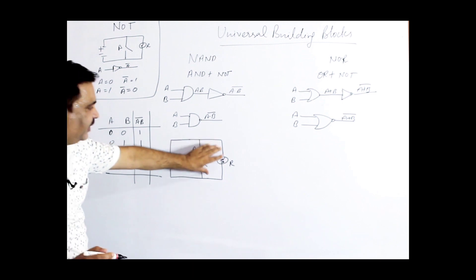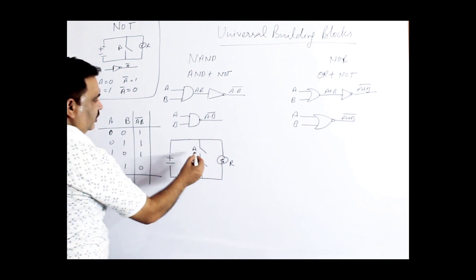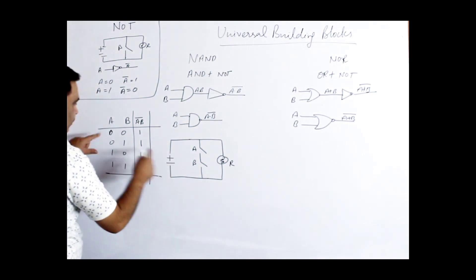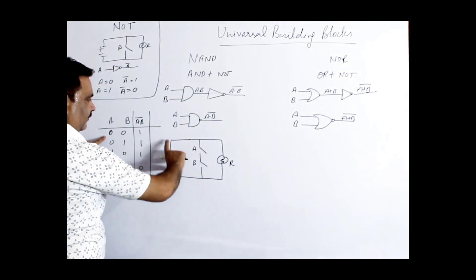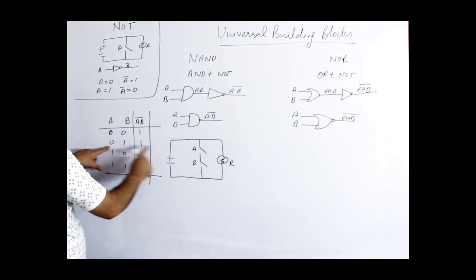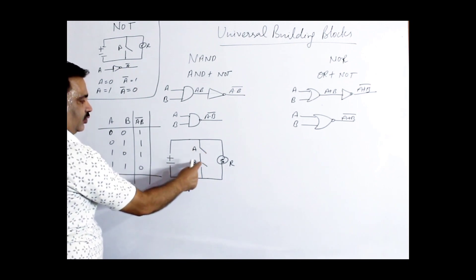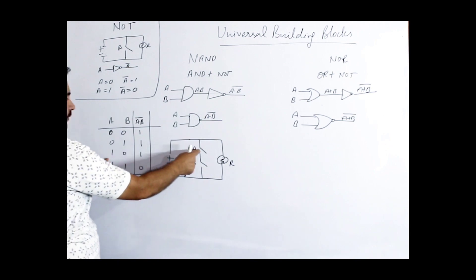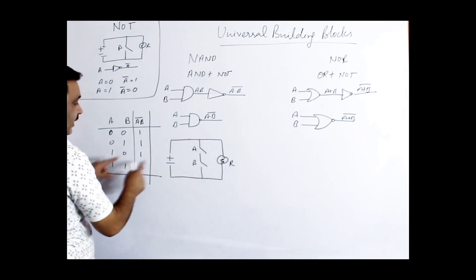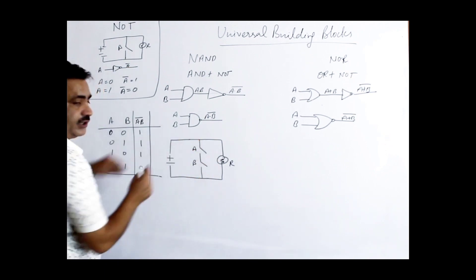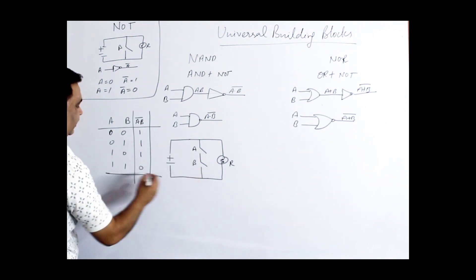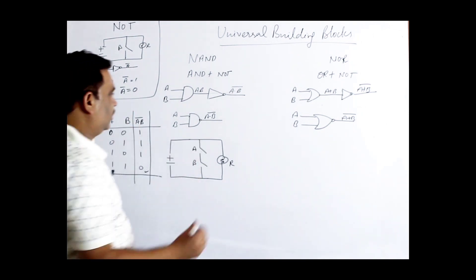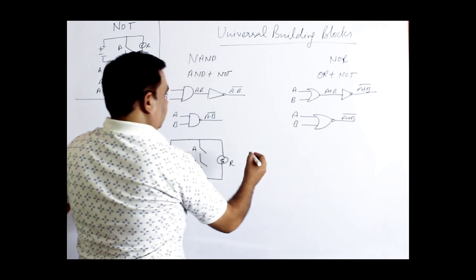For the NAND gate digital circuit, two switches A and B are in series. If both switches are OFF, the bulb will glow. If only B is ON, the bulb still glows. If only A is ON, the bulb still glows. But when both switches are ON, there will be a short circuit and the output will be 0.